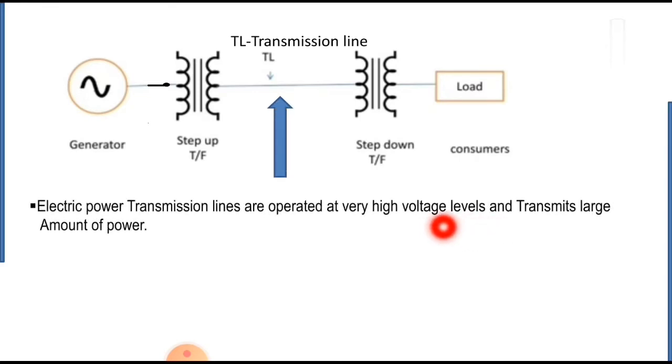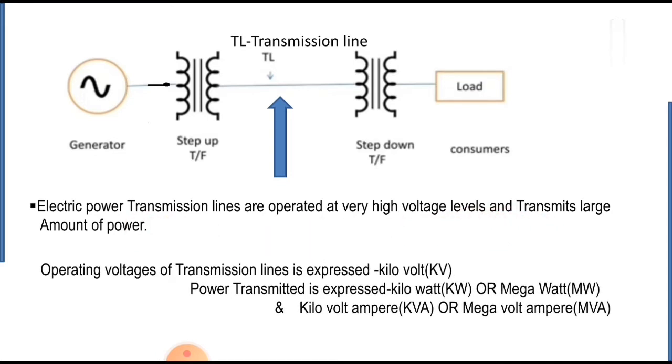Hence, the operating voltage of transmission lines is expressed in kilovolt (kV) and power transmitted is expressed in kilowatt (kW) or megawatt (MW) and kilovolt amperes (kVA) or megavolt amperes (MVA).